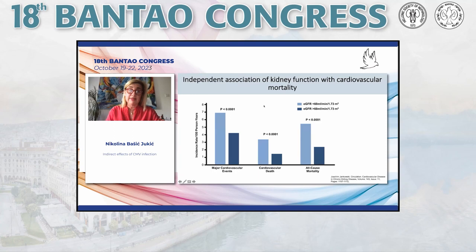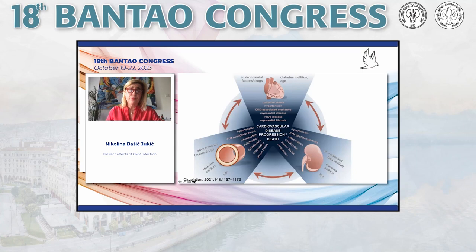If you look at a GFR less than 60 compared to patients who have a GFR more than 60 milliliters per minute per body surface area, the risk and incidence rate of major cardiovascular events is much higher, as well as the risk of cardiovascular death and all-cause mortality in those with worse glomerular filtration rate.